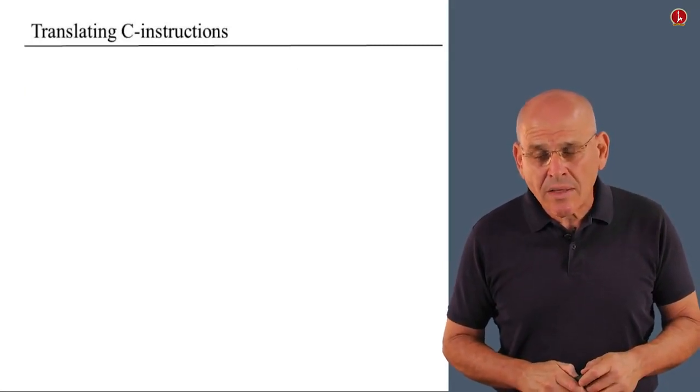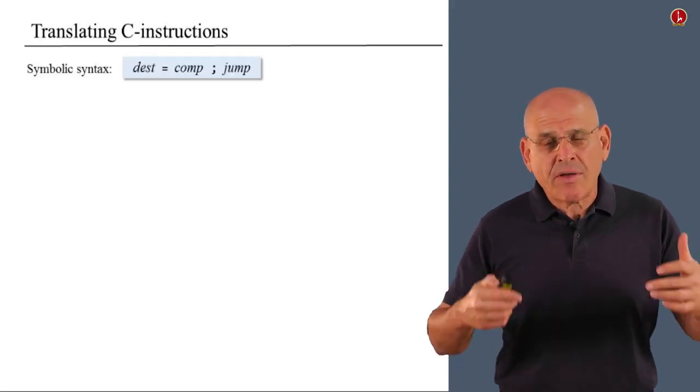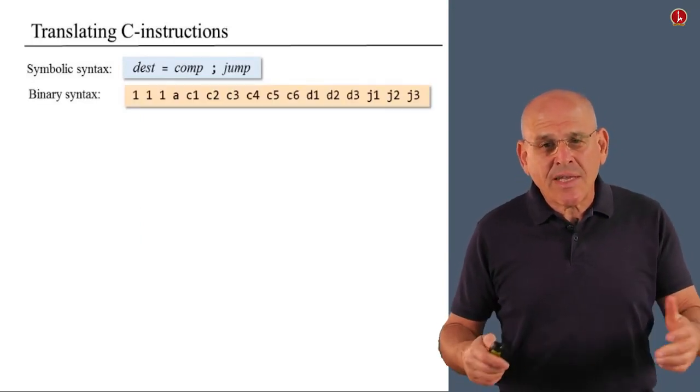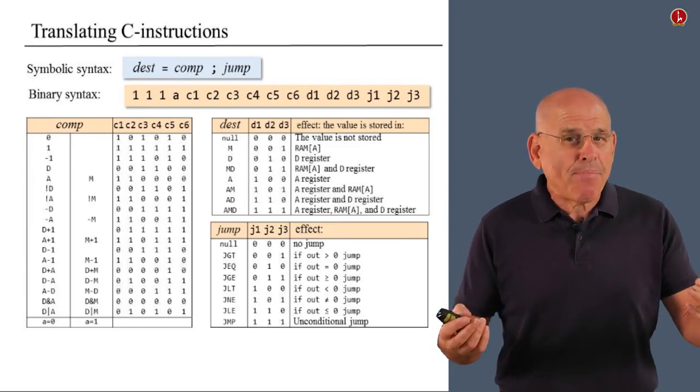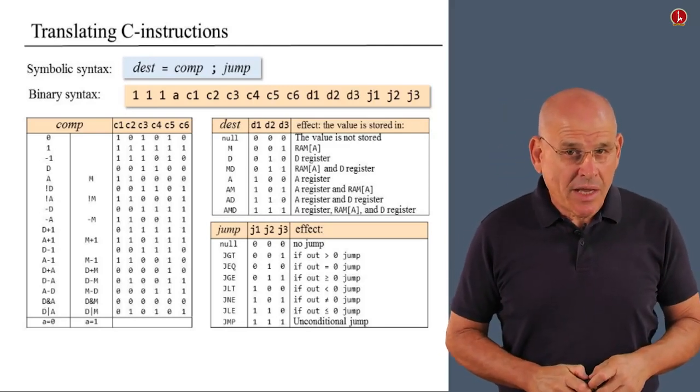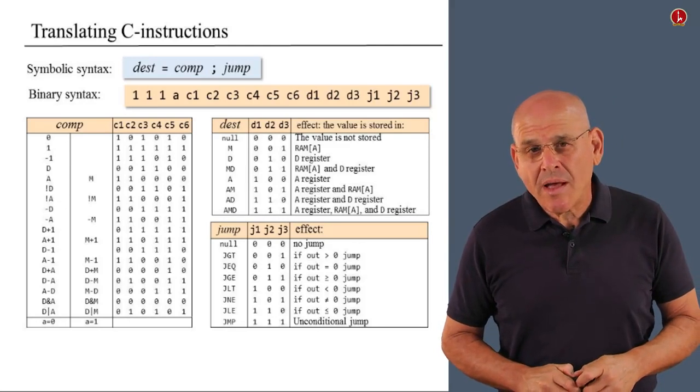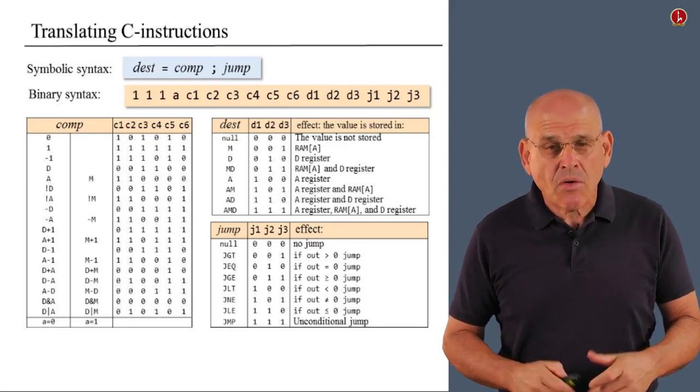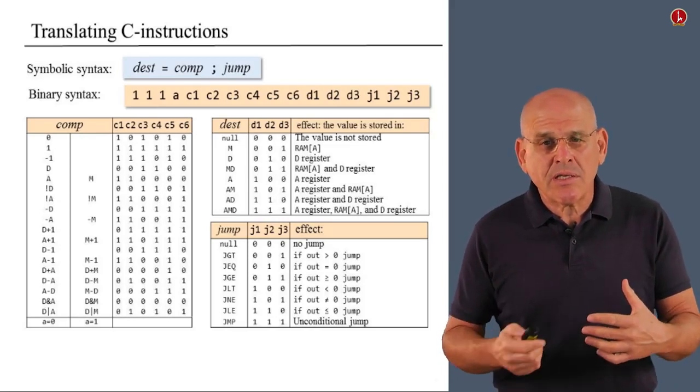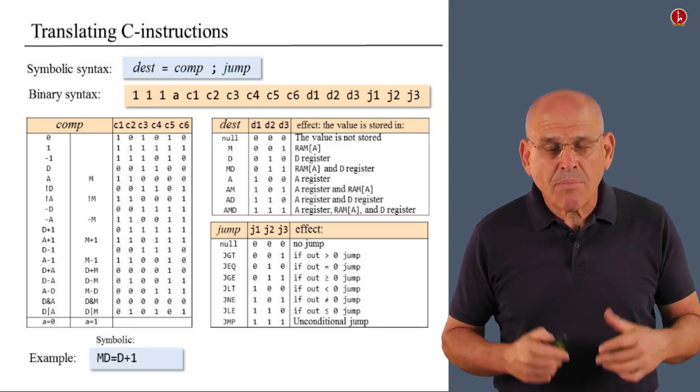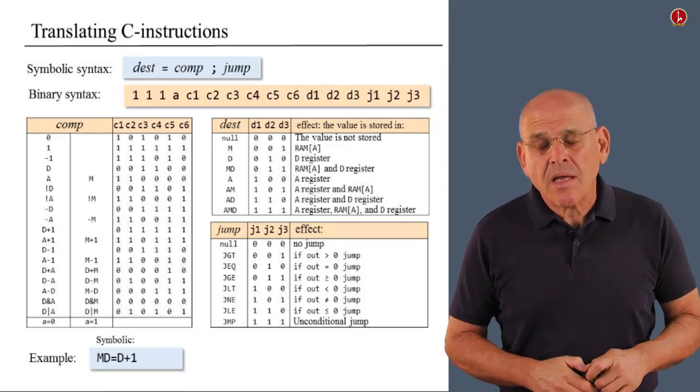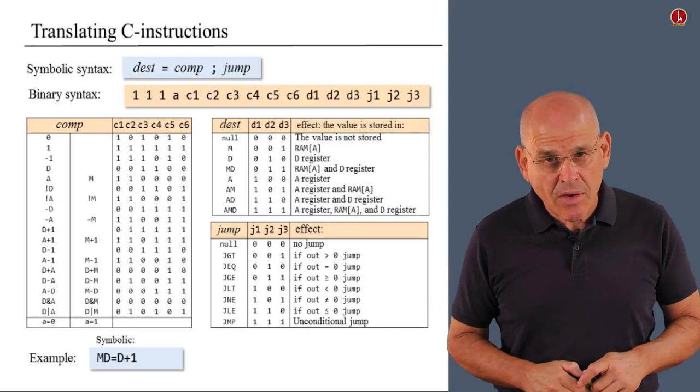All right, what about C instructions? Well, C instructions also have a symbolic manifestation and a binary manifestation, and there's a set of tables, so to speak, that describe the mapping from symbolic mnemonics into their binary representations. So, these are the rules of the game when it comes to translating C instructions. So, how do you actually do it? I think the easier way to describe the translation process is to do it using an example. So, suppose we are giving this, a single C instruction. And we have to translate it into binary code.